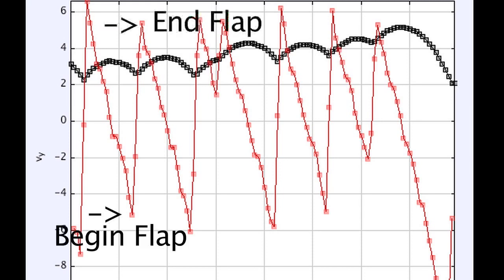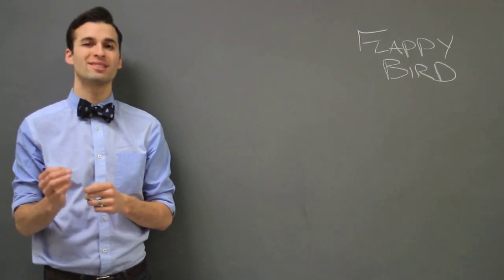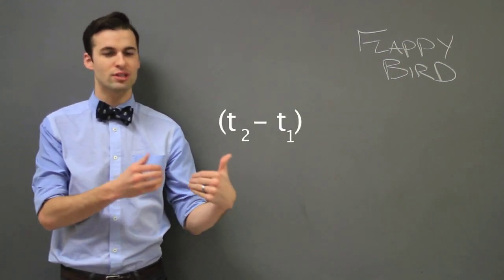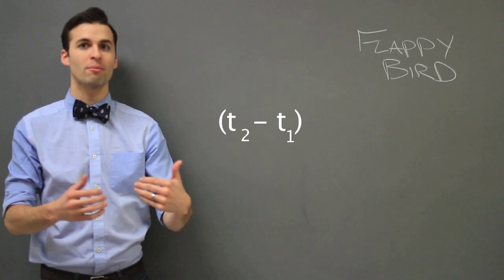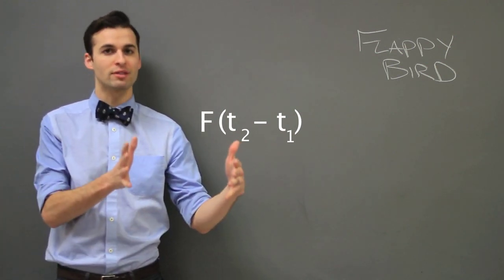Each flap lasts about 0.1 or 0.067 seconds. 0.1 or 0.067 is your delta T. If you take that change in time and you multiply it by the force, well, that force was applied over that given time frame.